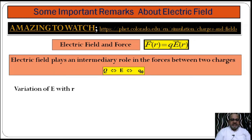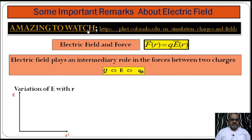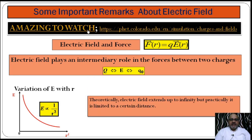Now, the variation of electric field with distance, shown graphically. The y-axis represents electric field and the x-axis represents r (distance). E is inversely proportional to r². Theoretically, the electric field extends up to infinity because the graph asymptotically approaches zero and touches zero only at infinity. But practically, it is limited to a certain distance.